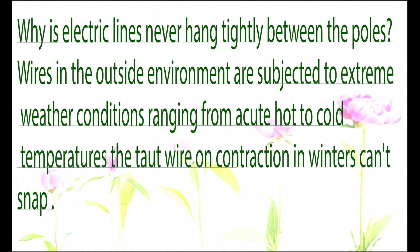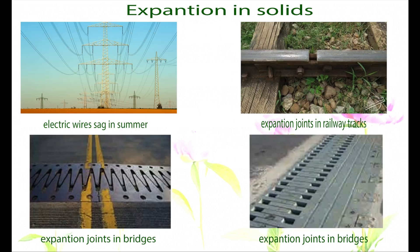Some examples of expansion in solids: electric wires sag in summer and get tight in winters. Expansion joints are provided in railway tracks and also in bridges to accommodate expansion and contraction due to temperature changes.